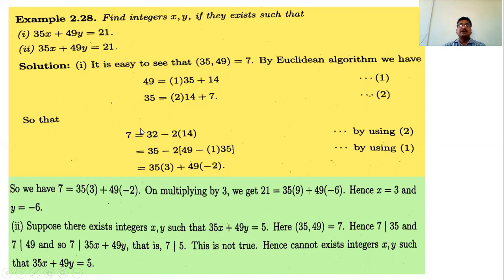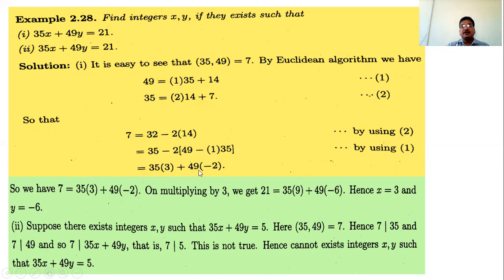Now express 21 in the form 35x + 49y. Since GCD = 7 and 21 = 7 times 3, first express 7 in the form 35x + 49y. We have 7 = 35 minus 14 times 2. Substituting 14 = 49 minus 35 times 1, we get 35 times 3 plus 49 times minus 2. Multiplying by 3: 21 = 35 times 9 plus 49 times minus 6. Therefore x = 9 and y = -6.